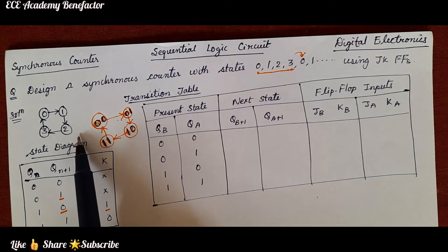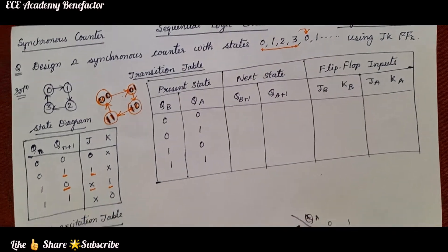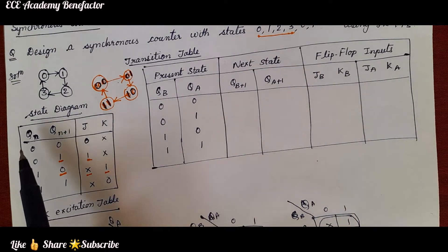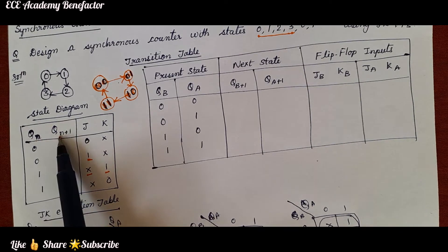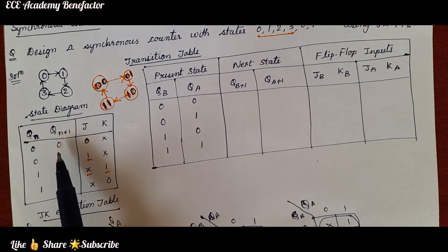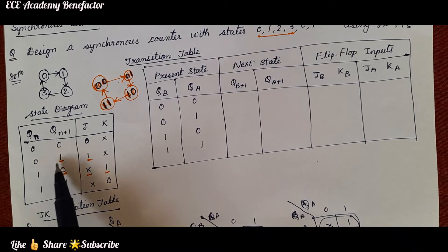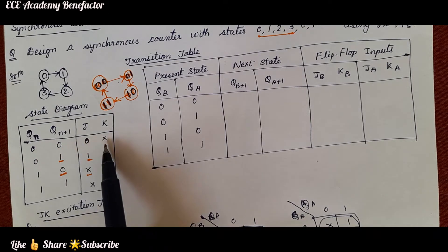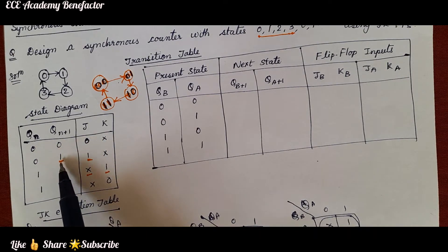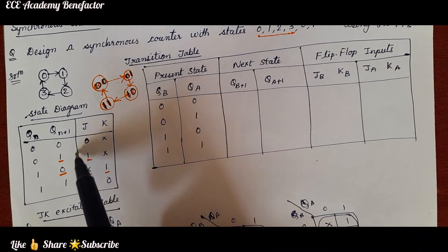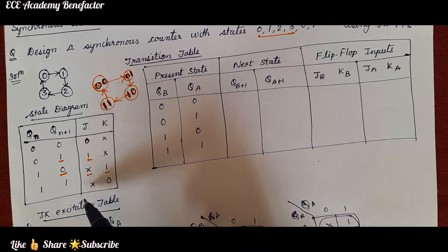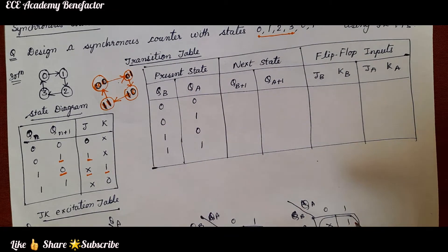First we have drawn the state diagram. Next we need to know the excitation table of the JK flip-flop. The excitation table is for the variables QN and QN+1. For 2 variables we can write 4 possible combinations: 00, 01, 10, 11. When the state is 00, JK is 0X; for 01 state the JK values are 1X; for 10 it is X1; and for 11 it is X0. We need to remember this column of J and K for drawing the transition table while drawing the counter.